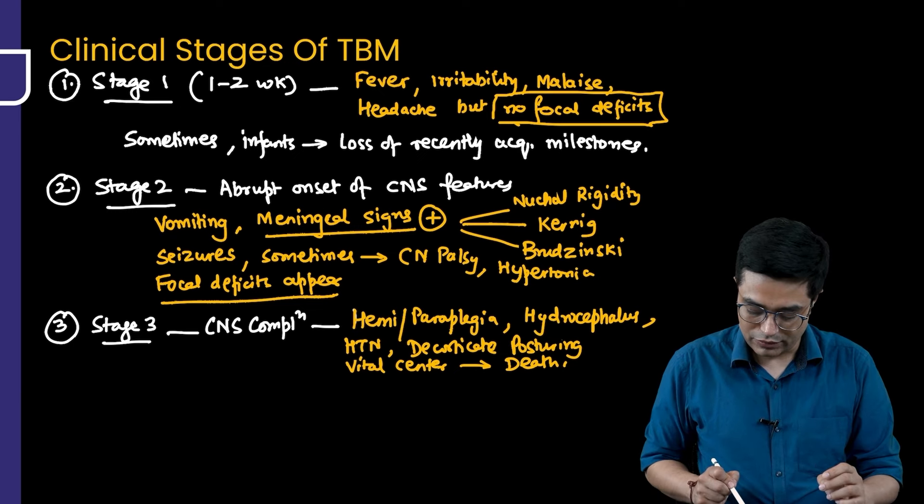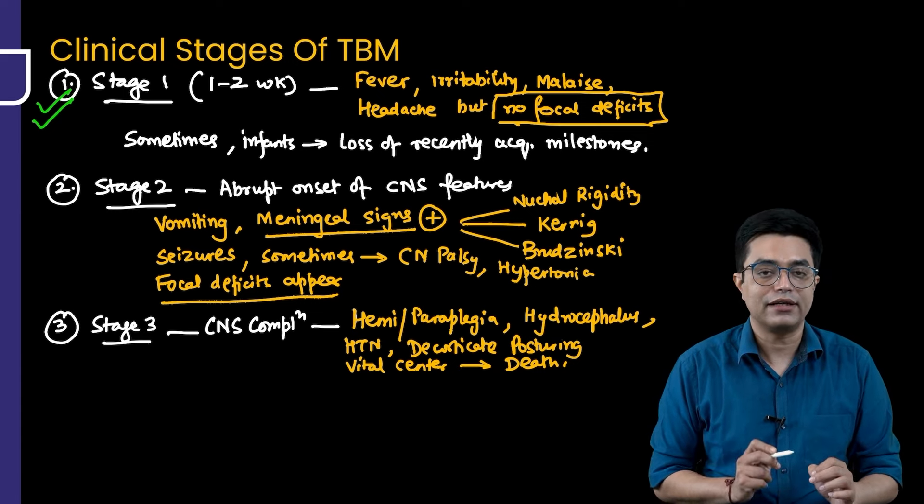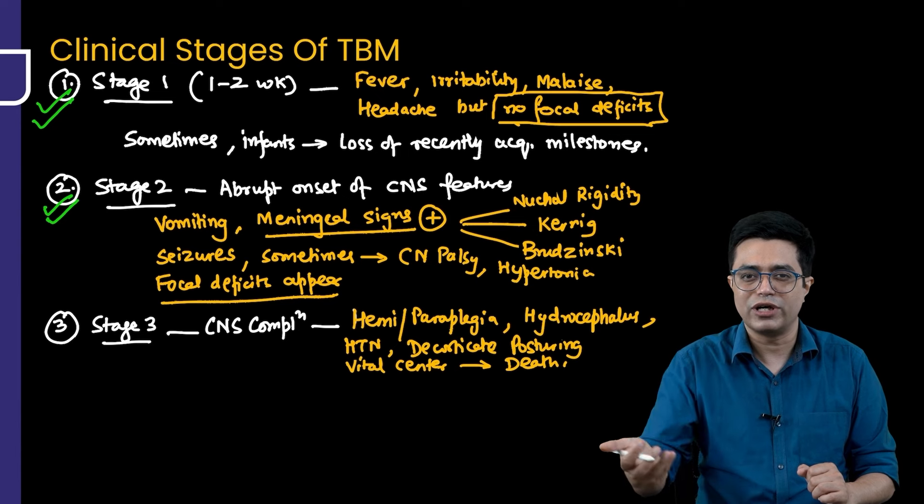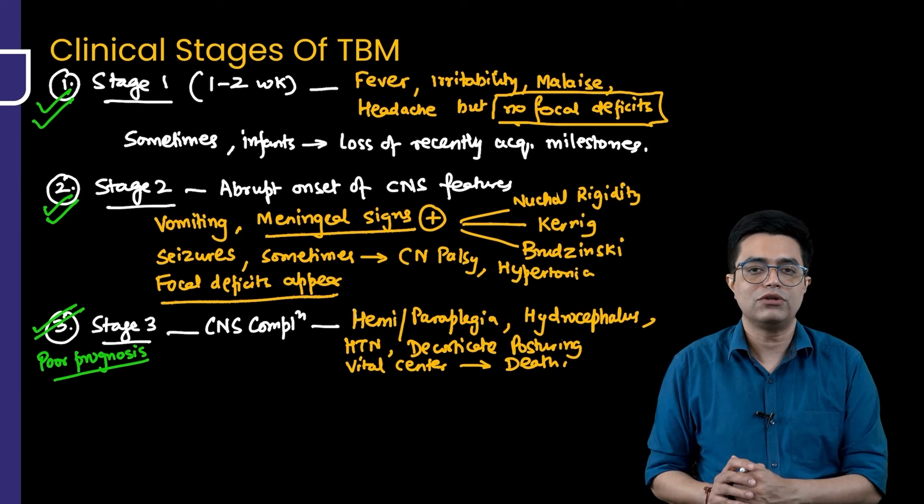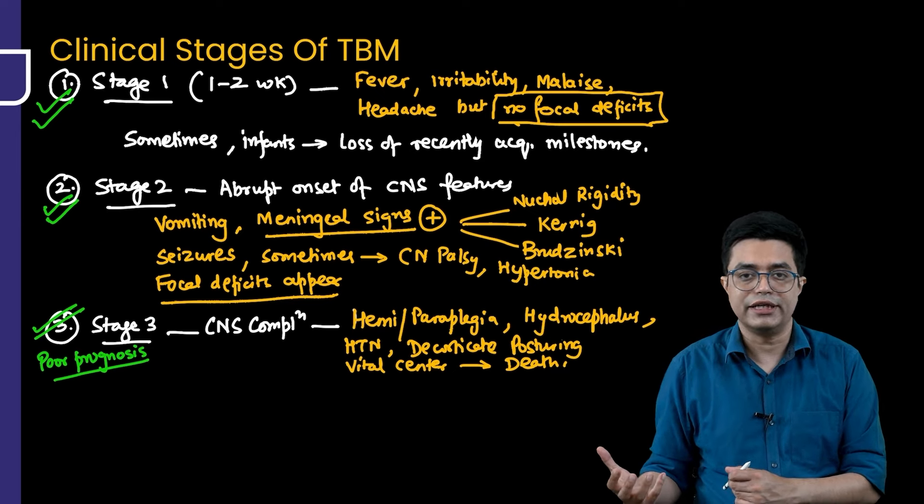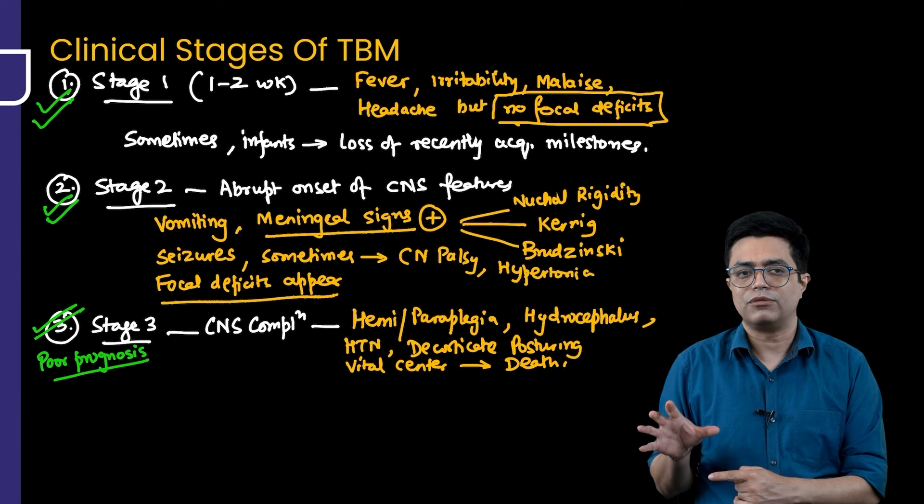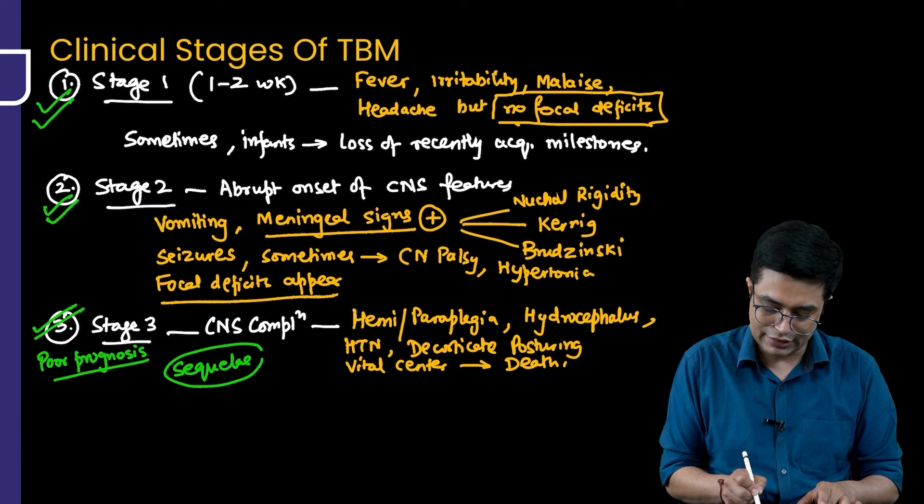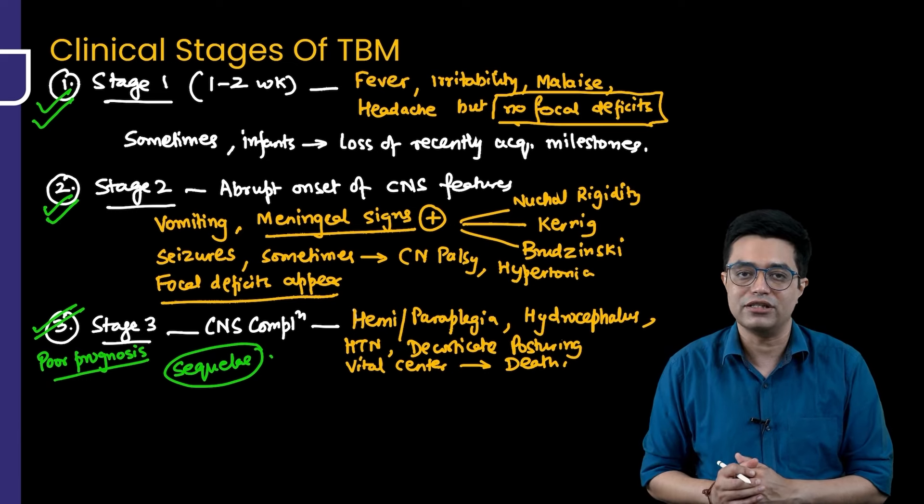Please understand that all the children who are in stage 1, if you start therapy in this stage, if you diagnose in this stage, they have an excellent outcome. Children with stage 2 features, they may require a prolonged therapy, but they usually also have a good outcome. All the children who reach stage 3, they have a poor prognosis. All the children who survive are usually left with some sequelae. The sequelae can be in the form of mental retardation, it can be in the form of persistent cranial palsies, it can be in the form of cortical blindness, it can also be in the form of deafness in the patient. If they ask you sequelae are frequently found in which stage, they are found in the stage 3, that is the CNS complication stage. These are the 3 clinical stages of tubercular meningitis that you should know.